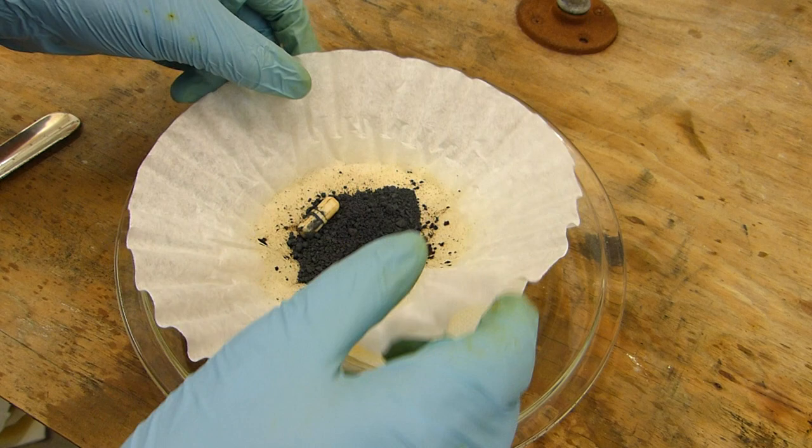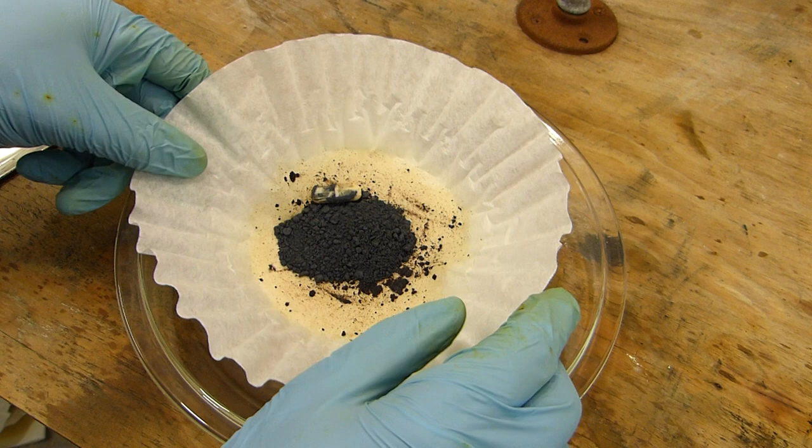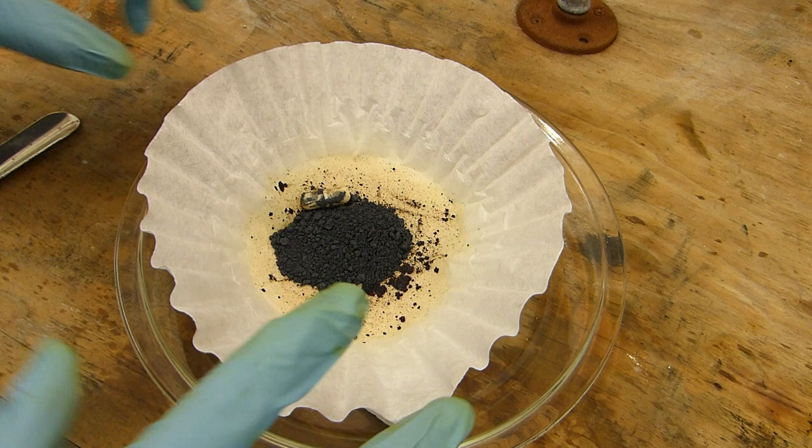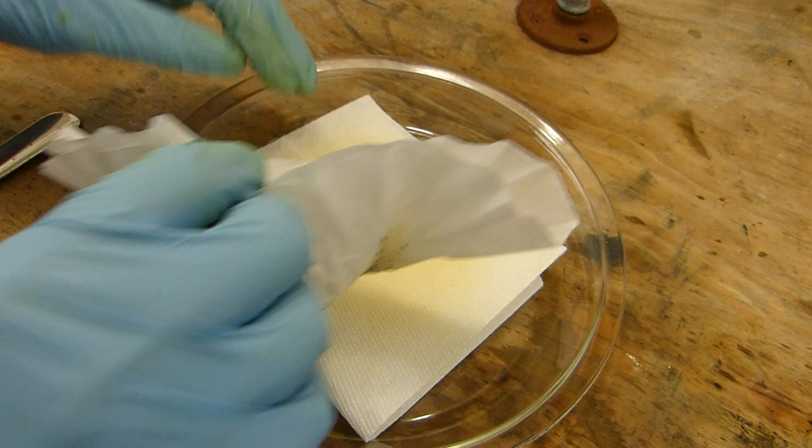After a bit of drying the iodine is now a mostly free-flowing dense sort of dark blue maybe purple solid. And I've changed this filter paper out once because it was getting really saturated and I want to try to dry the iodine out as quickly as possible. Of course because it evaporates at room temperature.